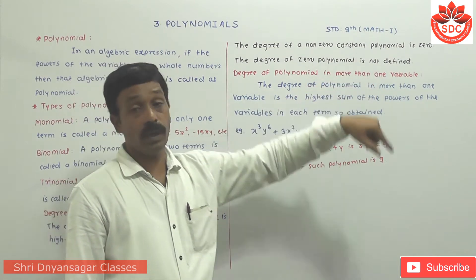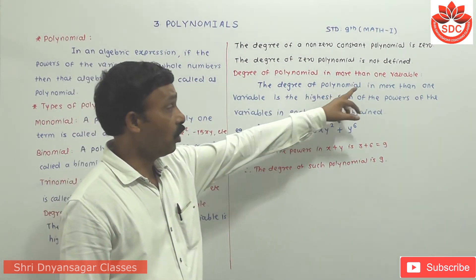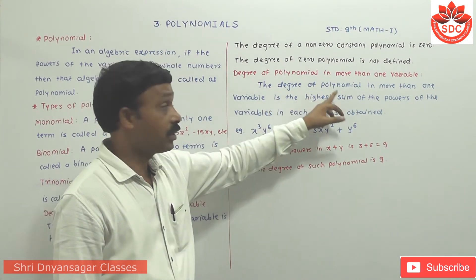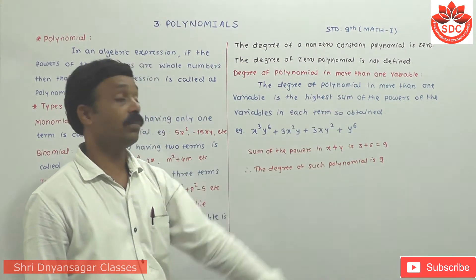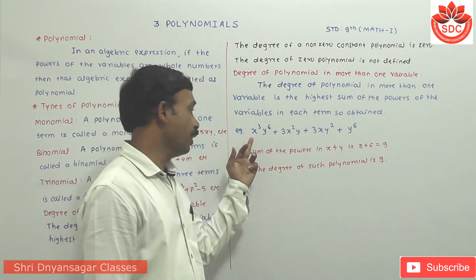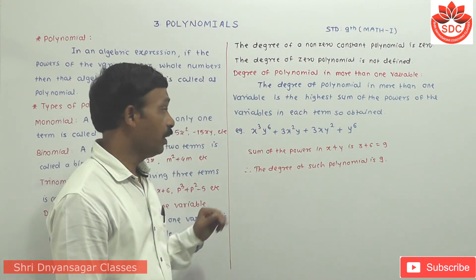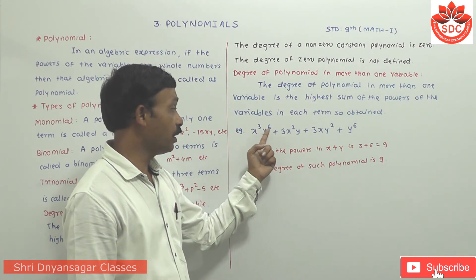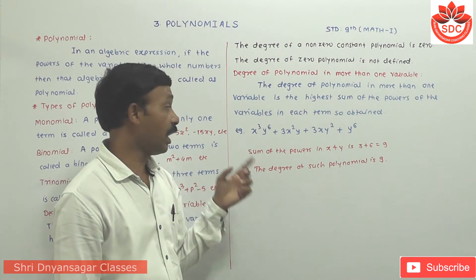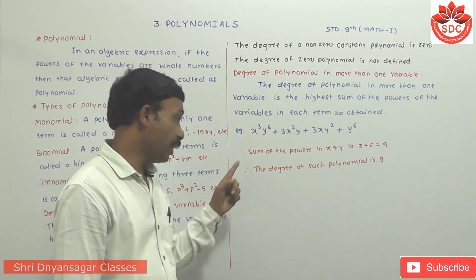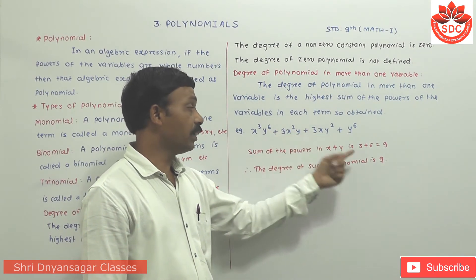Degree of polynomial in more than one variable: the degree is the highest sum of the powers of the variables in each term. For example: x³y⁶ + 3x²y + 3xy² + y⁶. The sums are 3+6=9, 2+1=3, 1+2=3, and 6. The highest is 9. Therefore the degree of this polynomial is 9.